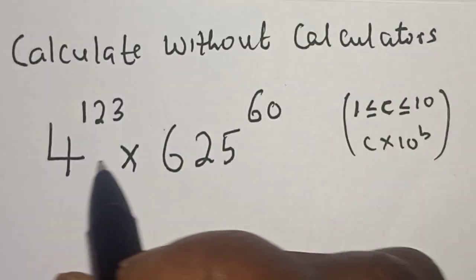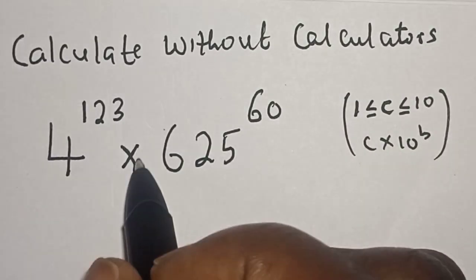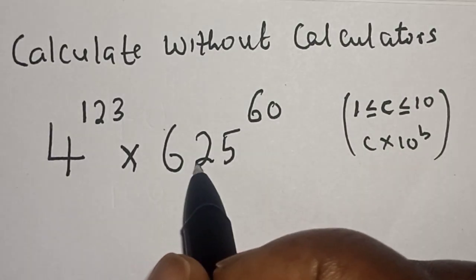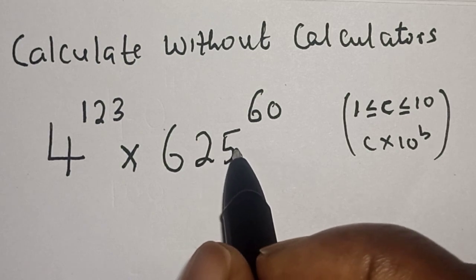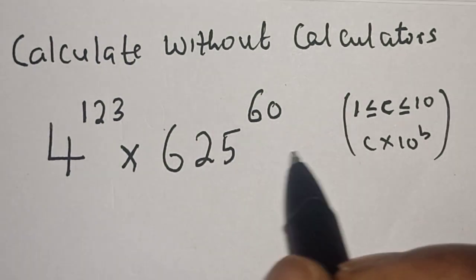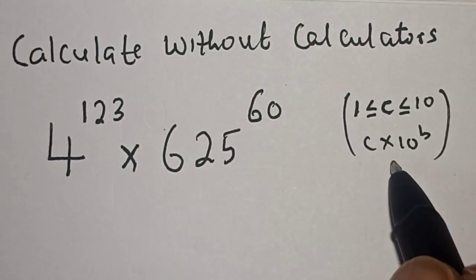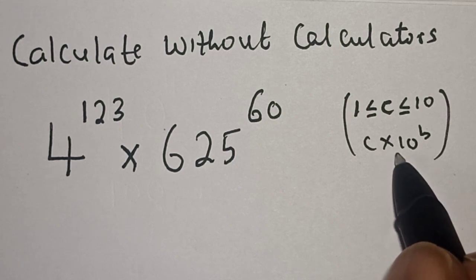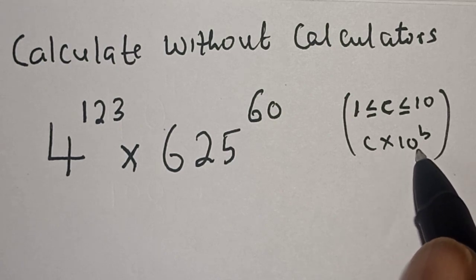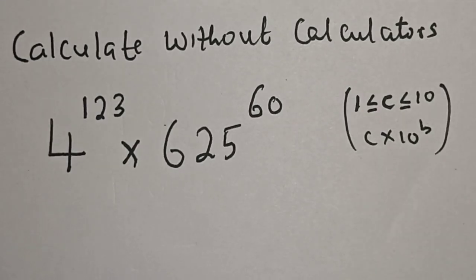Calculate without a calculator: 4 to the power of 123 multiplied by 625 raised to the power of 60. We are going to write the answer in standard form, c multiplied by 10 raised to the power of b.